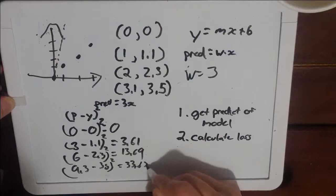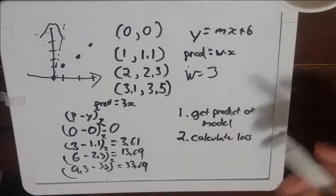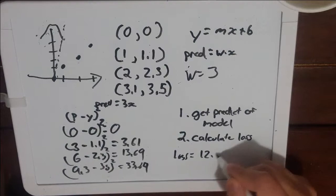Okay now what we're going to do is add all these up and then divide by four and that's going to give us a loss that is 12.73. Pretty easy stuff.